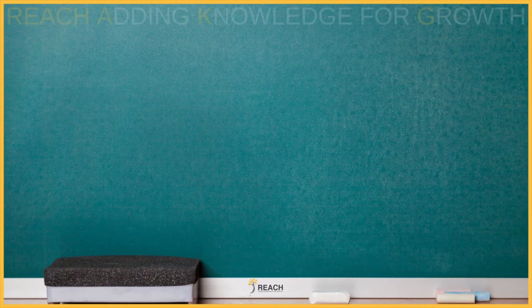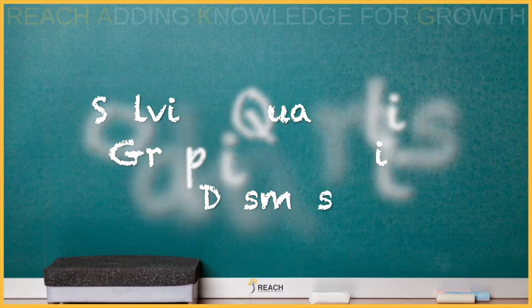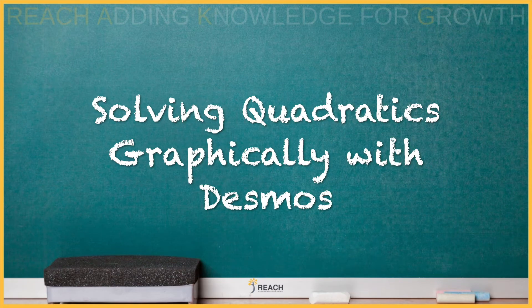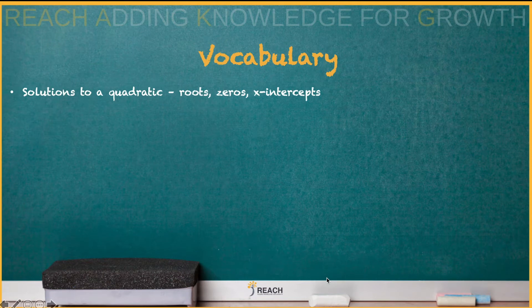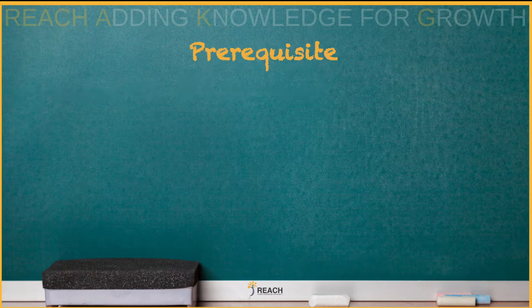Welcome back guys, it's AG. You're watching Math to the Max. Today we will solve quadratics graphically with Desmos. Solutions to a quadratic are called roots, zeros, and x-intercepts. Pretty much, they may say solve the quadratic and they want to know where it crosses the x-axis.